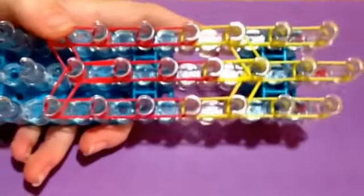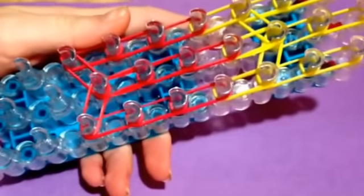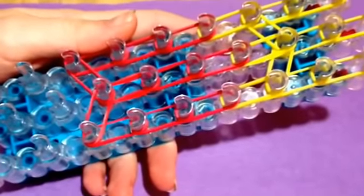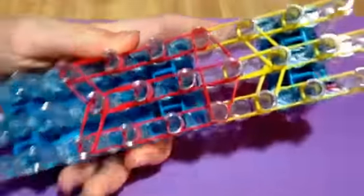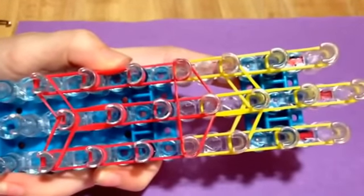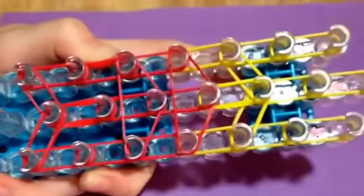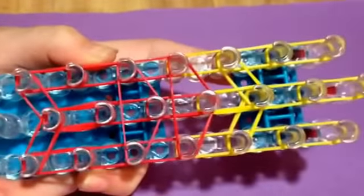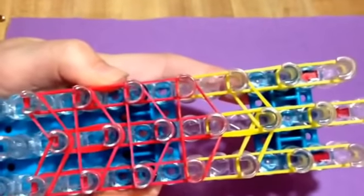Now, we're going to be placing some holding bands. So, take two red, put them over these three pegs so you have a triangle. Taking two more red, going over those three pegs, making a triangle. And two more, going over those three pegs to make a triangle.